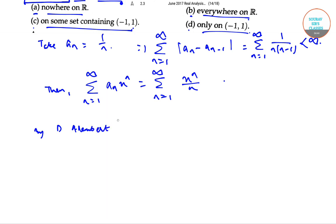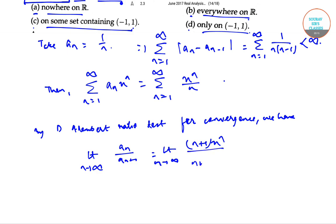Now, by D'Alembert ratio test for convergence, we have lim(n→∞) a_n/a_(n+1) = lim(n→∞) [(n+1)x^n]/[nx^(n+1)] = 1/x > 1, provided